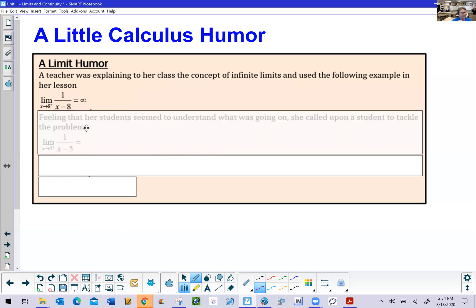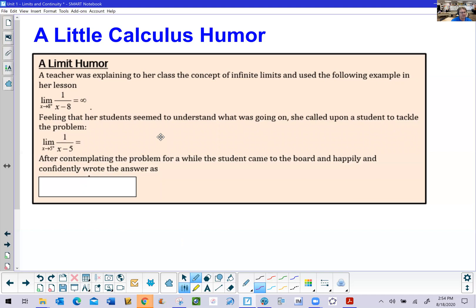Well, now feeling that her students seemed to understand what was going on, she called upon a student to tackle this limit problem: the limit as x approaches 5 from the right of 1 over x minus 5. The student got real excited and after contemplating the problem for a while, came up to the board and happily and confidently wrote this answer. Aren't limits a blast?